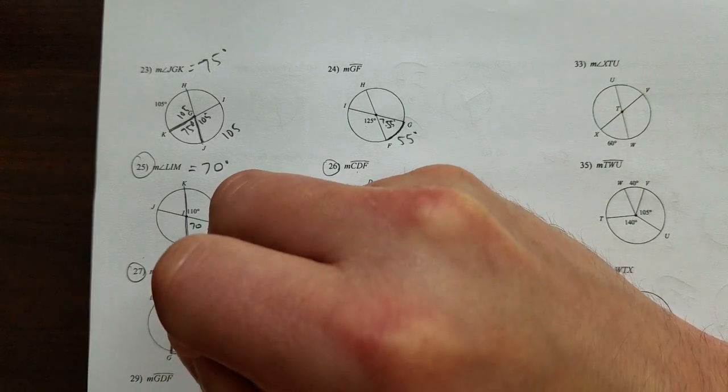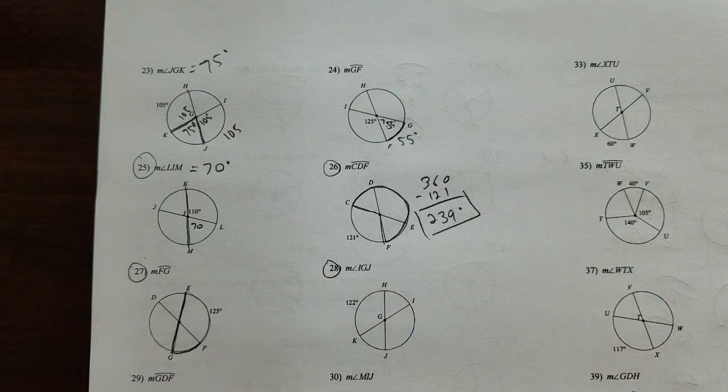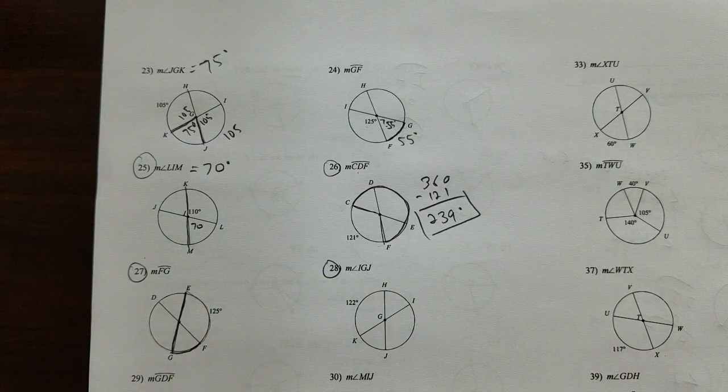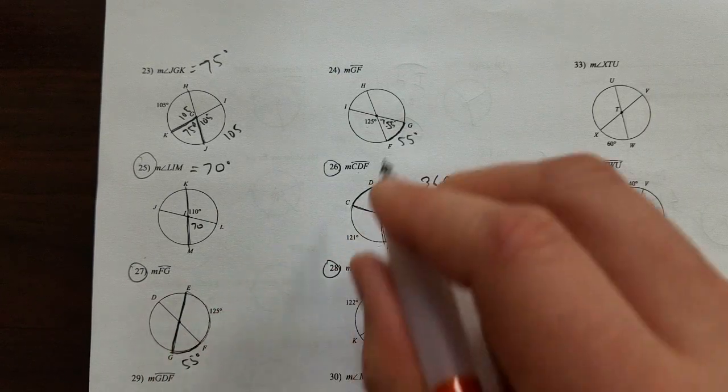this diameter, which would be 180 degrees. 125 plus something equals 180, and it turns out that it is still 55 degrees, the same as it was in the other problem we did.